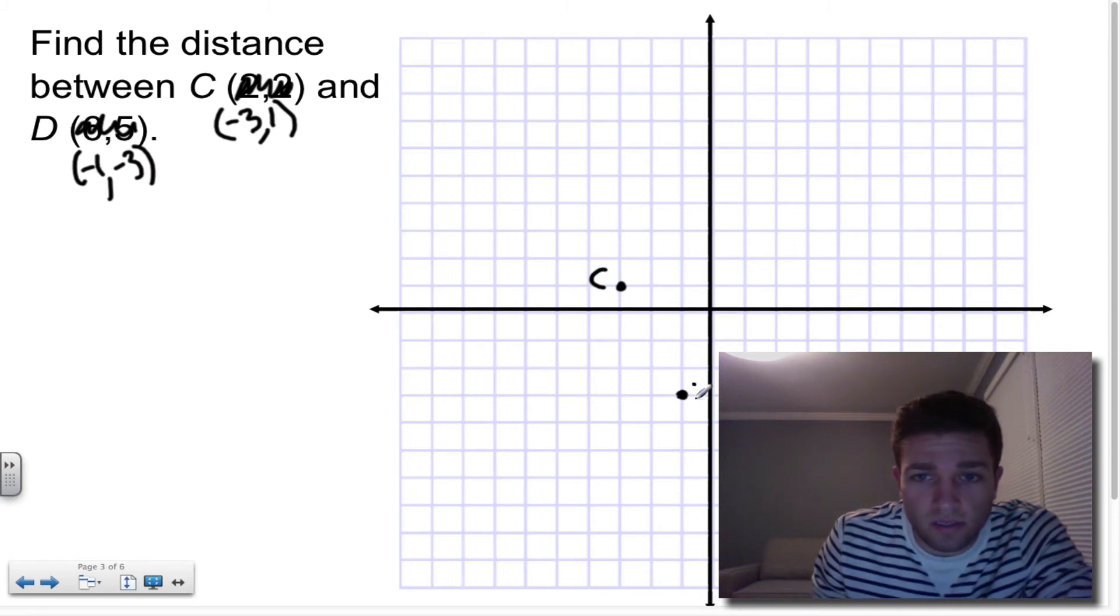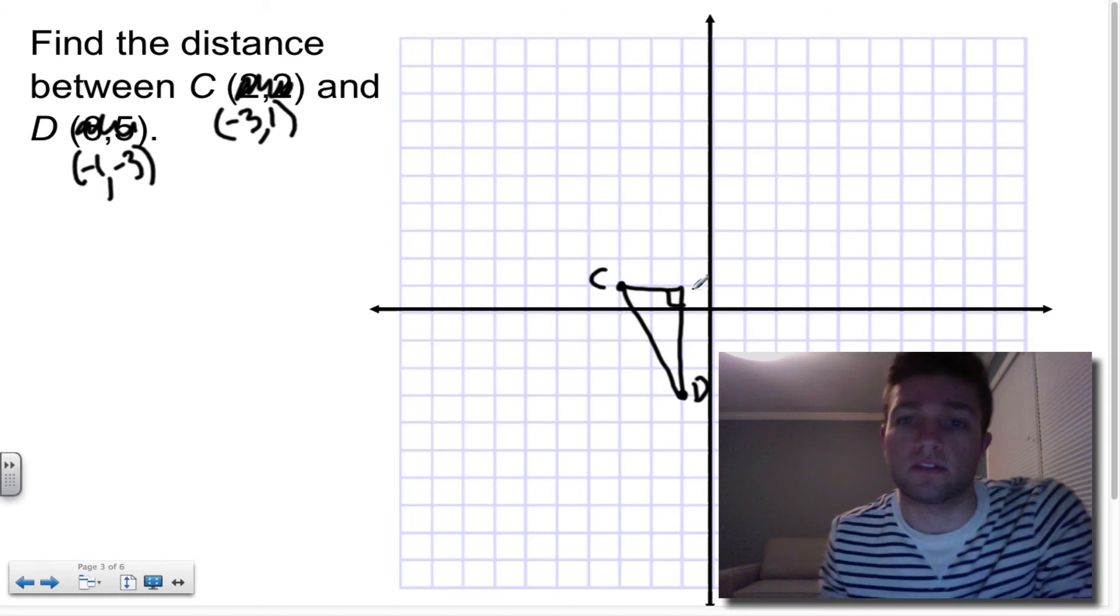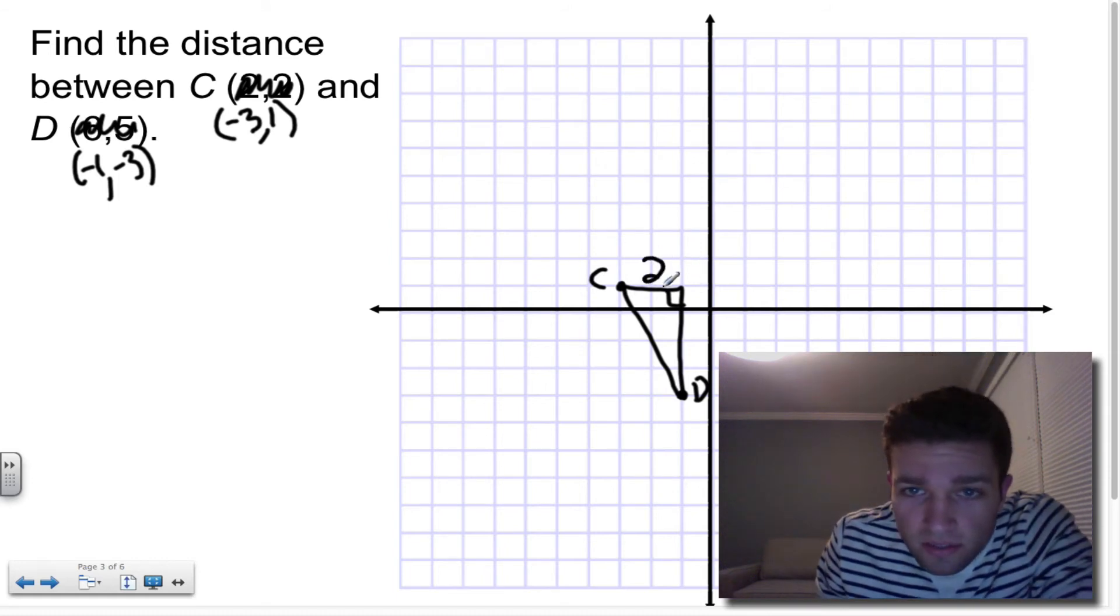All right, point C, point D. What's the distance between these two points? Well, Pythagorean Theorem. I can form myself a right triangle. This is two units long. This is four units long.